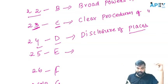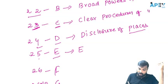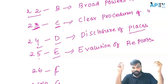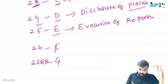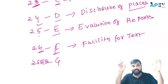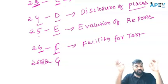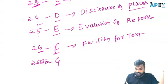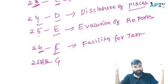The next one is 25, that is E — Section 25. What is that? Evaluation of reports — the reports of the government analyst. So, government analyst reports, we evaluate here. The next one, 26 — F, Section 26. What is F? Facilities for test — the right to test. Any person who has purchased any drug or cosmetic, on payment of the prescribed fees, can perform the test.